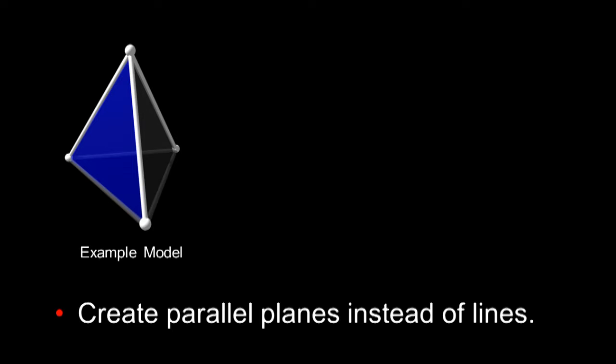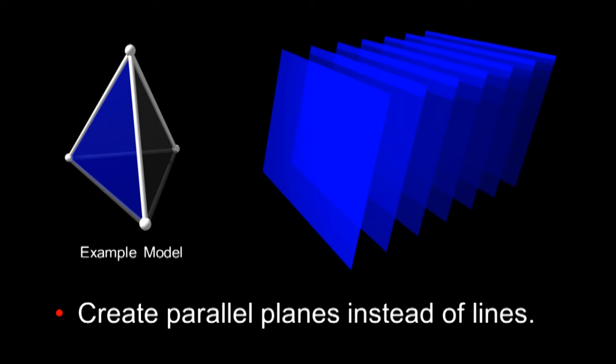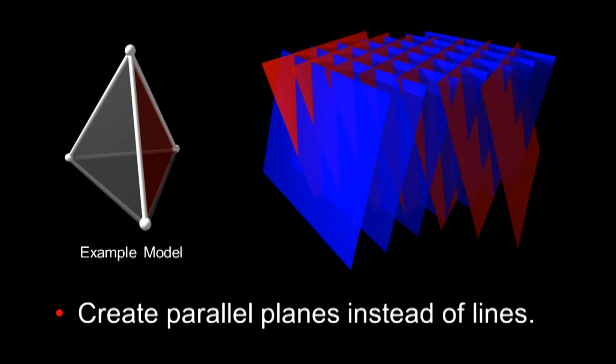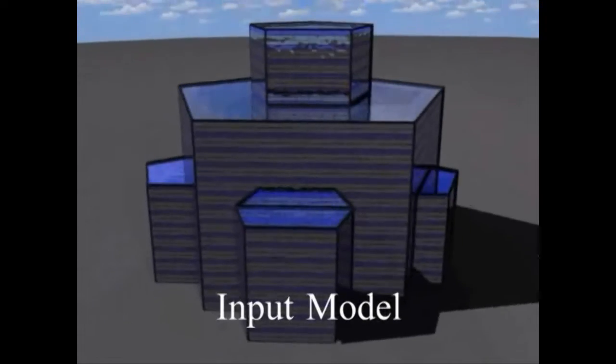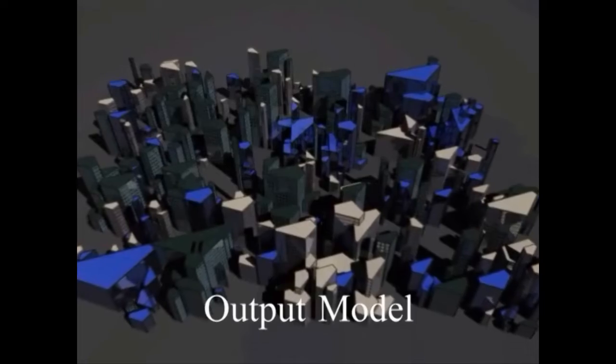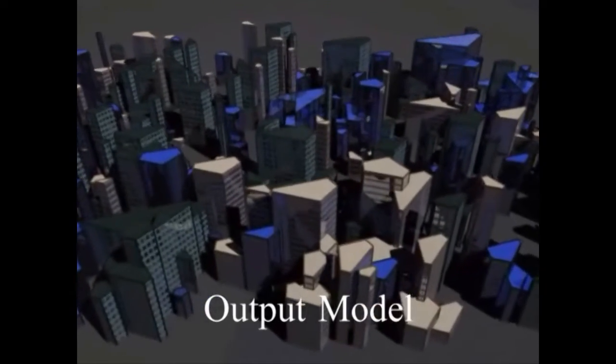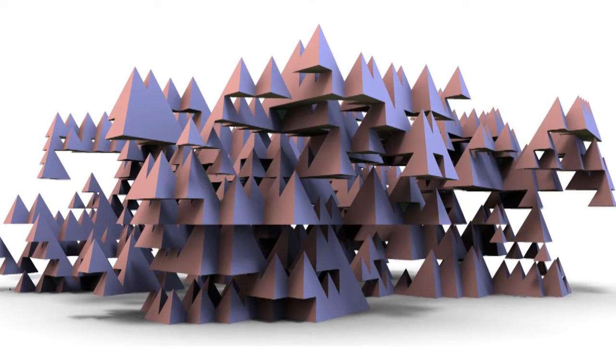For this blue face, we're going to create one set of parallel planes. For the red face, another set of parallel planes. And then a set for the yellow face and the green face. This method can generate objects that don't fit on a regular grid, like pentagon shaped buildings and these fractal patterns.